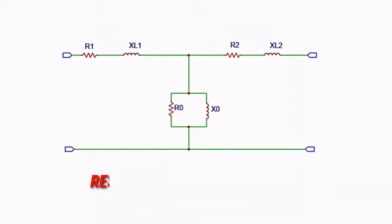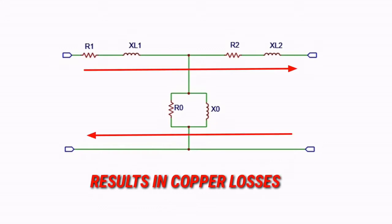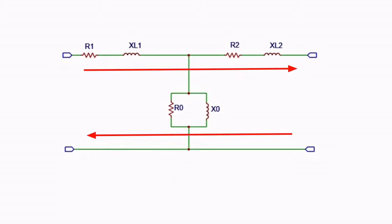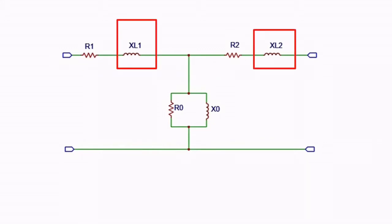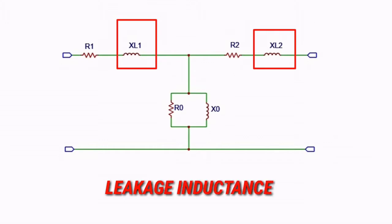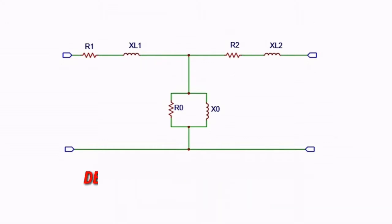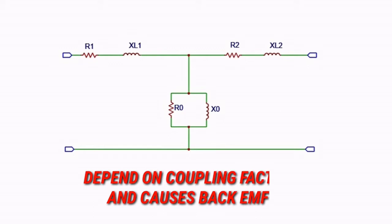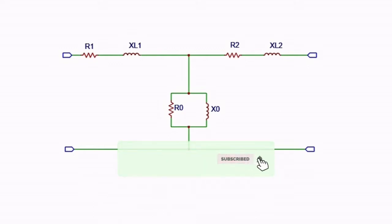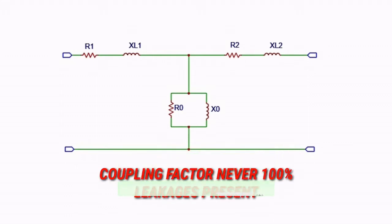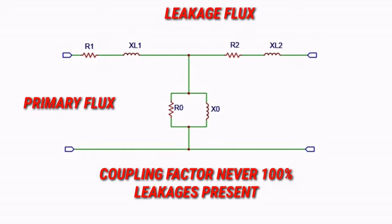which results in copper losses, which are quite less than other losses. XL1 and XL2 represent the leakage inductance, which depends on the coupling factor and causes back EMF. To be precise, though the windings are tightly coupled, the coupling factor is never 100%. There are always some leakage losses, which means the primary flux never entirely